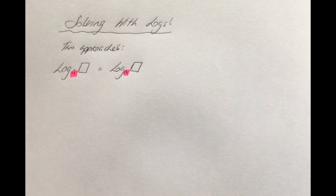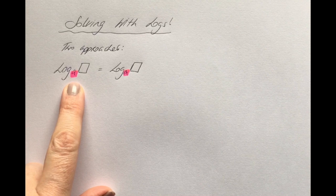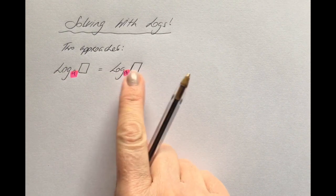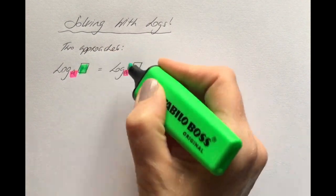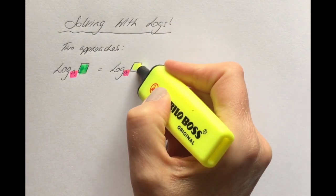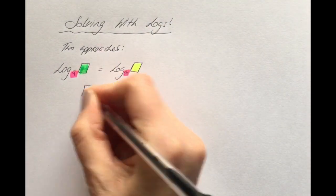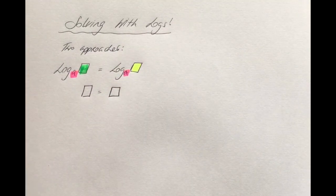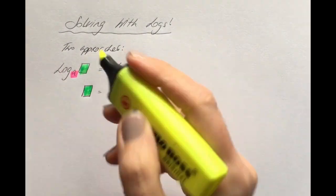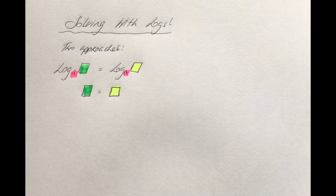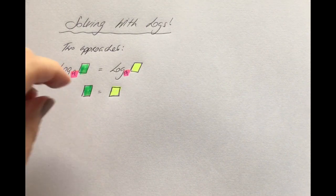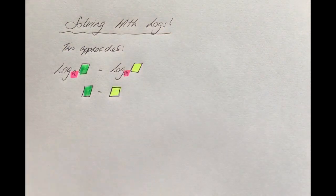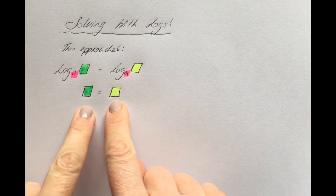Once you get it all tidied up so you've got log of something in a base on the left hand side, and log of something else but in the same base on the right hand side, then you can deduce that those two things must be equivalent. It's a little bit like the approach we take when solving for indices — get both sides looking the same and then pull out what's equal.